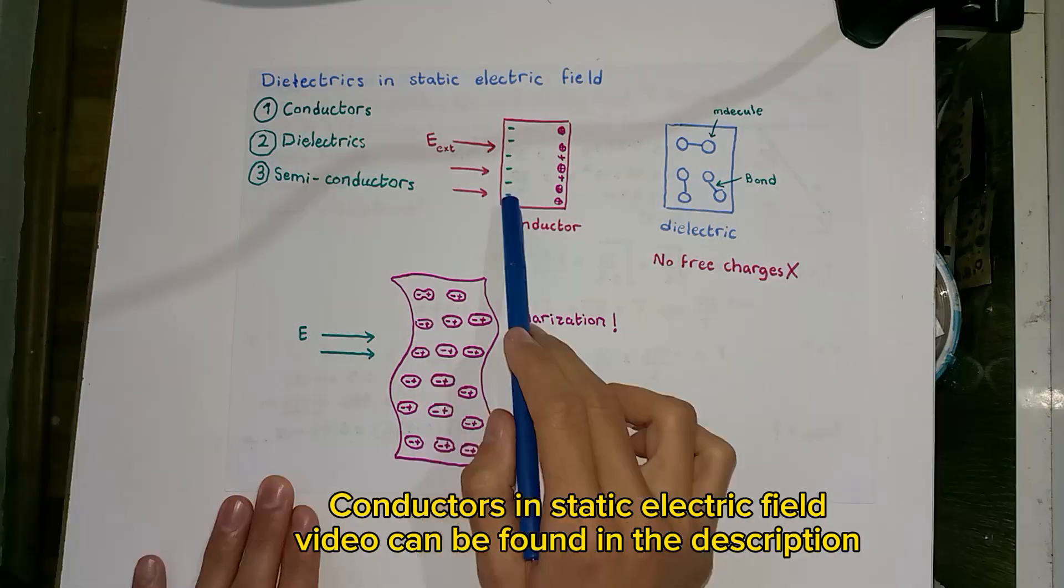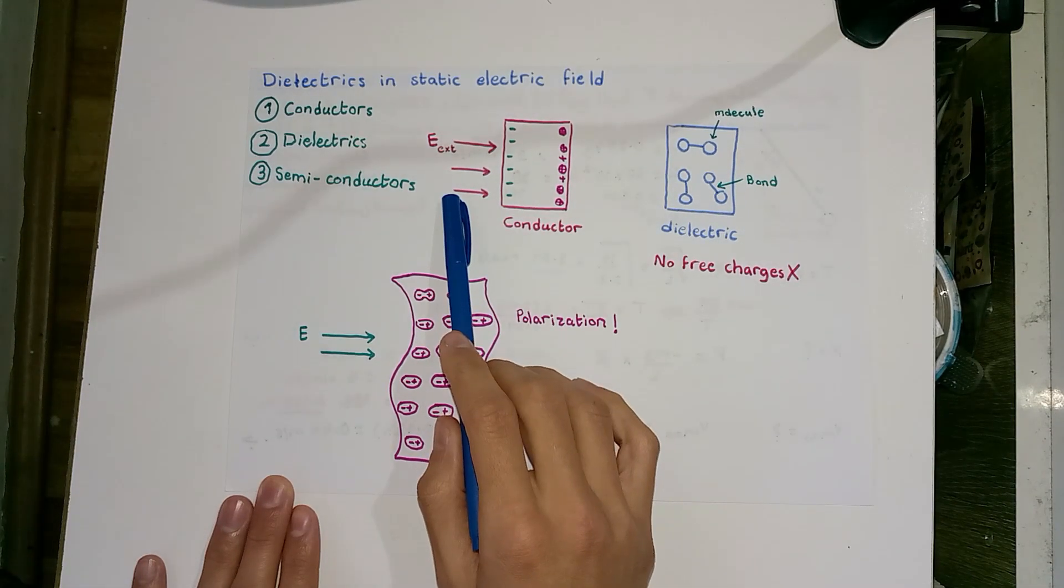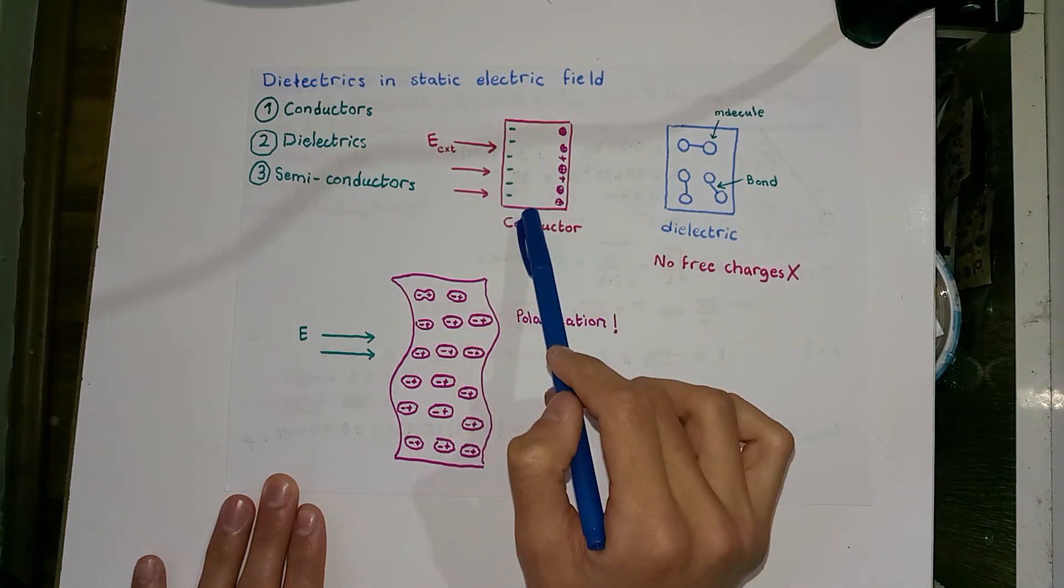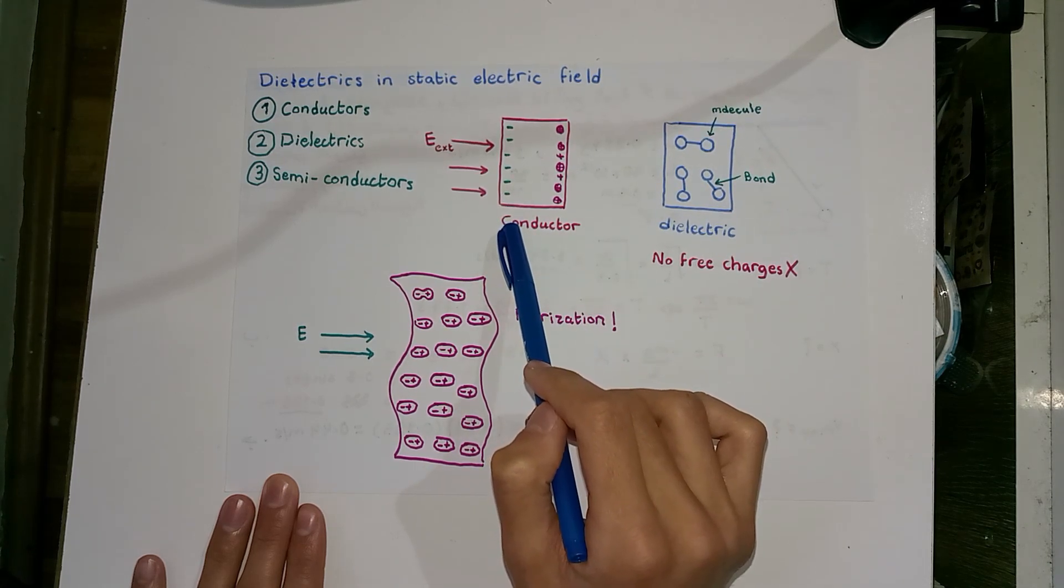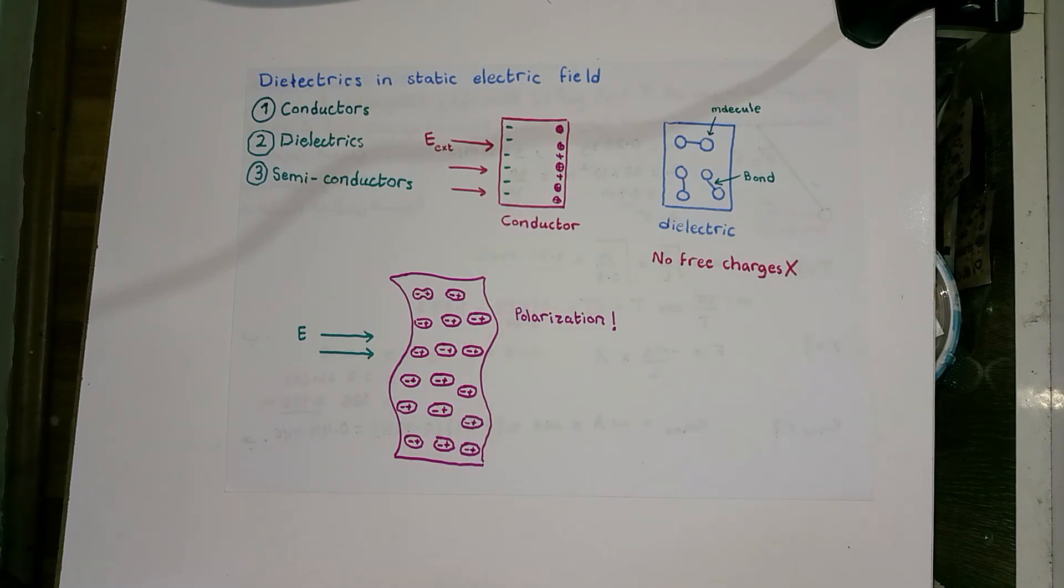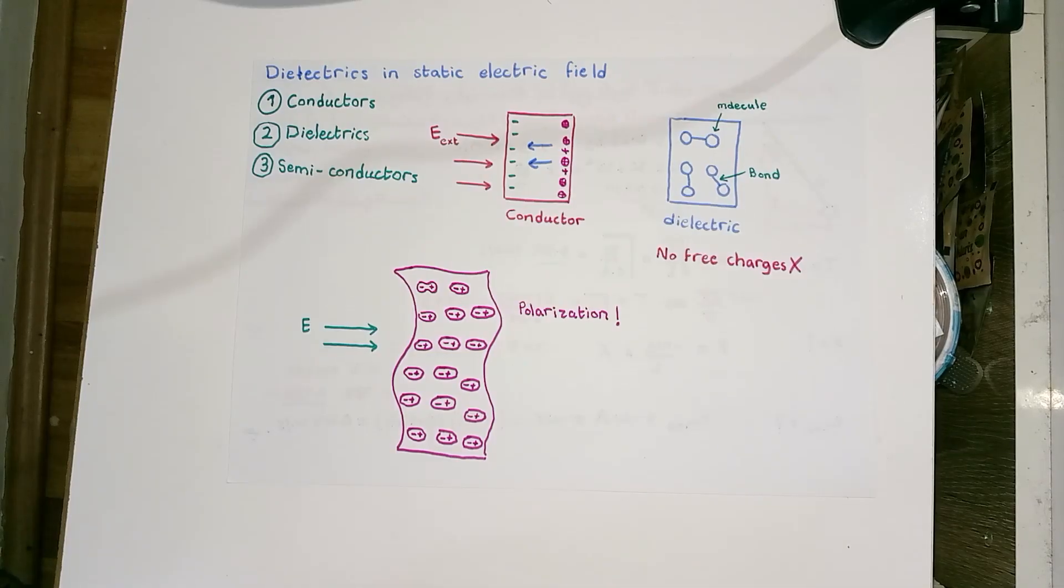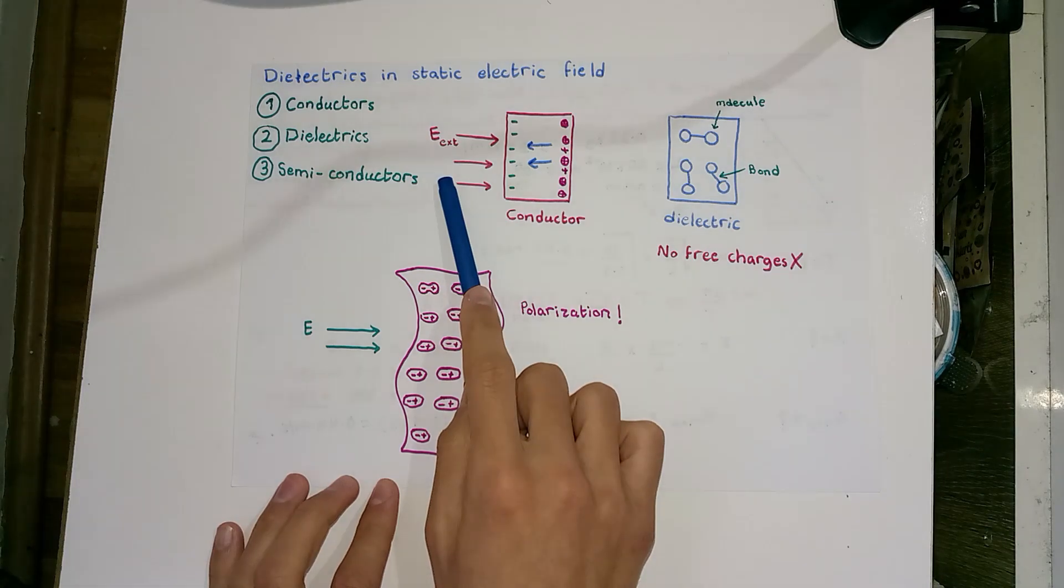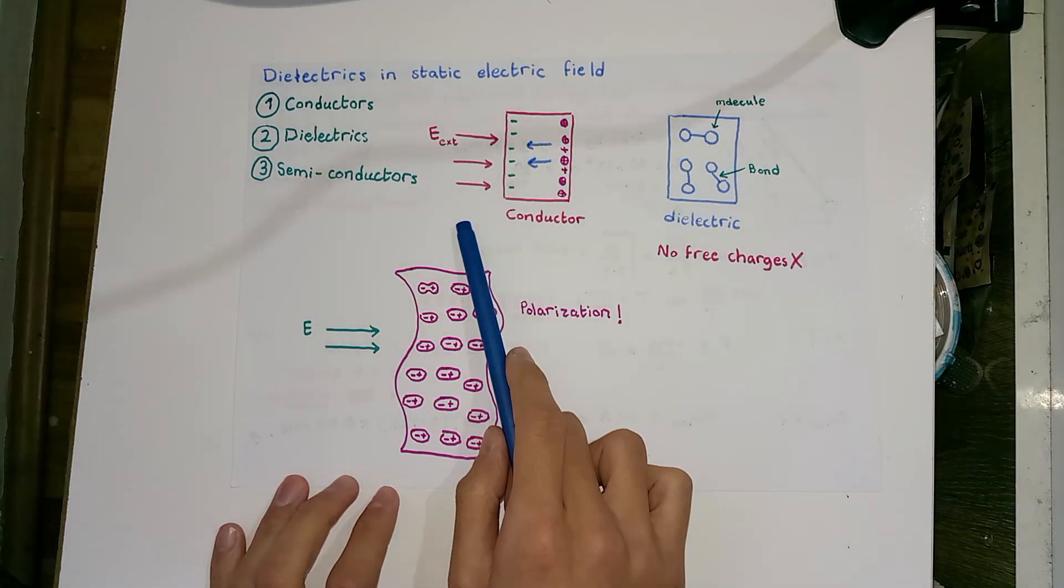As we said in a previous video, in conductors, free charges exist. When a conductor is placed in an external electric field, charges redistribute themselves. Positive charges accumulate on one side and negative charges on the other. An internal electric field is created due to this redistribution, which cancels out the external electric field, and consequently we have no electric field inside the conductor.